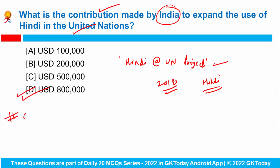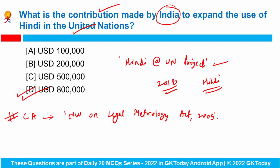The Department of Consumer Affairs recently organized a one-day national workshop on the Legal Metrology Act 2009. This act was passed to establish and enforce standards of weights and measures, and to regulate trade and commerce in weights, measures and other related goods. Union Consumer Affairs, Food and Public Distribution Minister Piyush Goyal said there is a need for decriminalization of the Legal Metrology Act 2009. If asked, the Union Ministry associated with this act is the Ministry of Consumer Affairs, Food and Public Distribution.